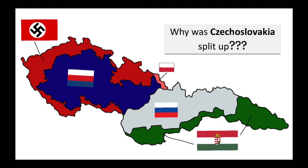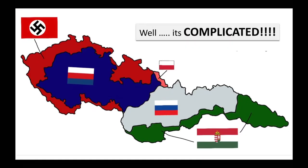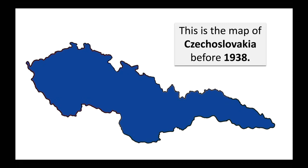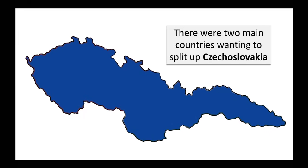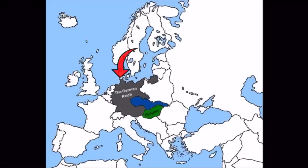Why was Czechoslovakia split up? Well, it's complicated. This is a map of Czechoslovakia before 1938. There were two main countries wanting to split up Czechoslovakia: the German Reich and Hungary.